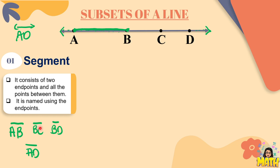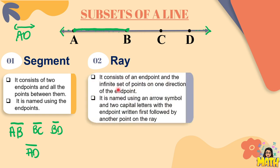The next subset is what we call the ray. It consists of an endpoint and the infinite set of points on one direction. So for example, ray BD from point B to the left, infinitely, ayan yung tinatawag nating ray BD. Another example, we can have ray AB as well as ray CA or ray DA.